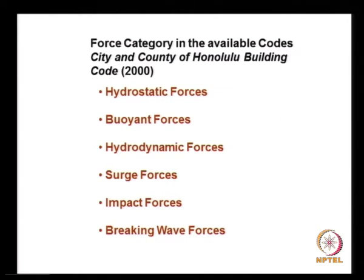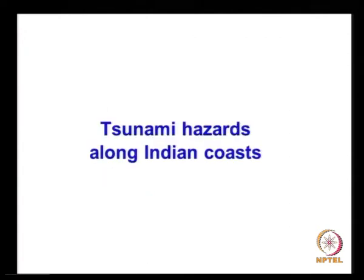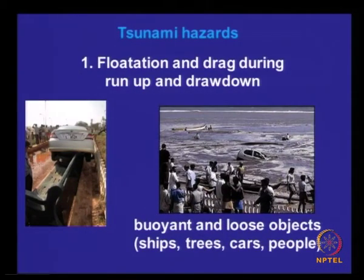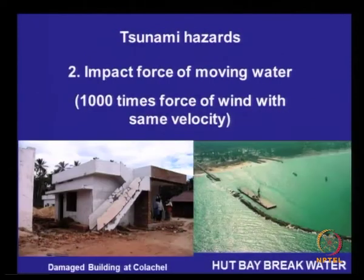The force categories are: hydrostatic force, buoyant force, hydrodynamic surge forces, impact forces, and breaking wave forces. Along the Indian coast there was flotation, drag force due to run-up and draw-down, buoyant and loose objects like ships, trees, cars, and people. The second tsunami hazard category is the impact force of moving water — you have 1000 times the force of wind at the same velocity.